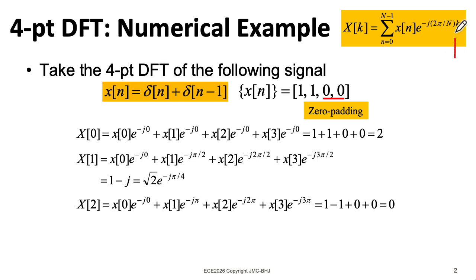Next, when we plug in two for k, our first term is the same. That's just one. But the second term now has an e to the minus j pi, so that's minus one. So those cancel and you get zero.